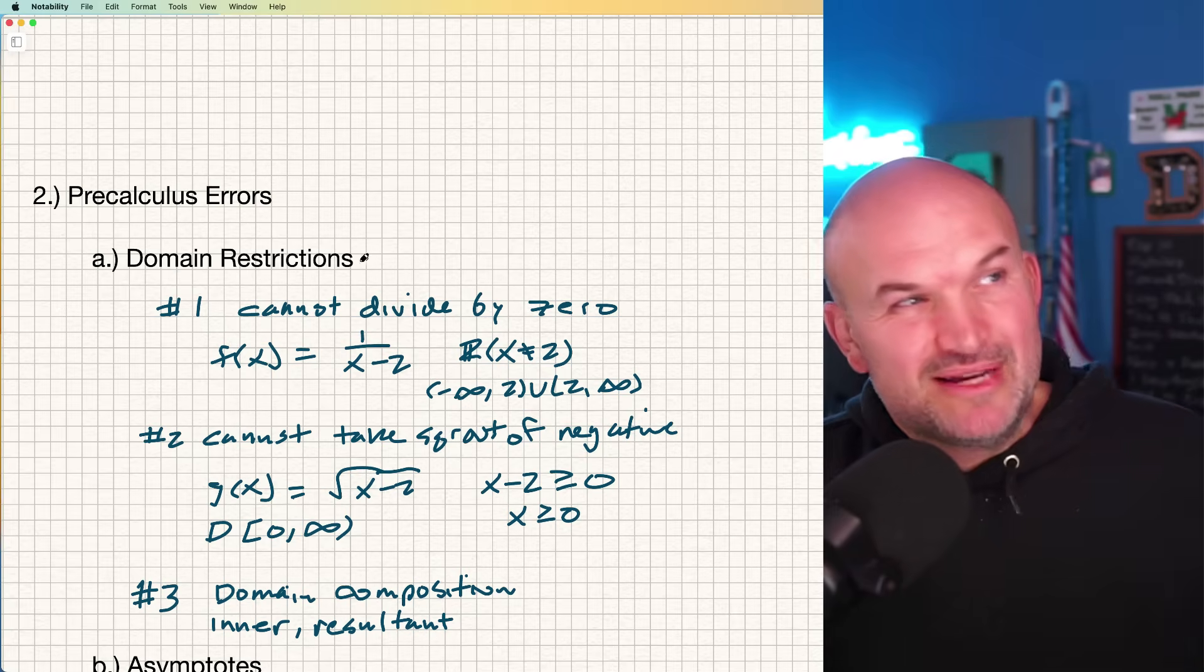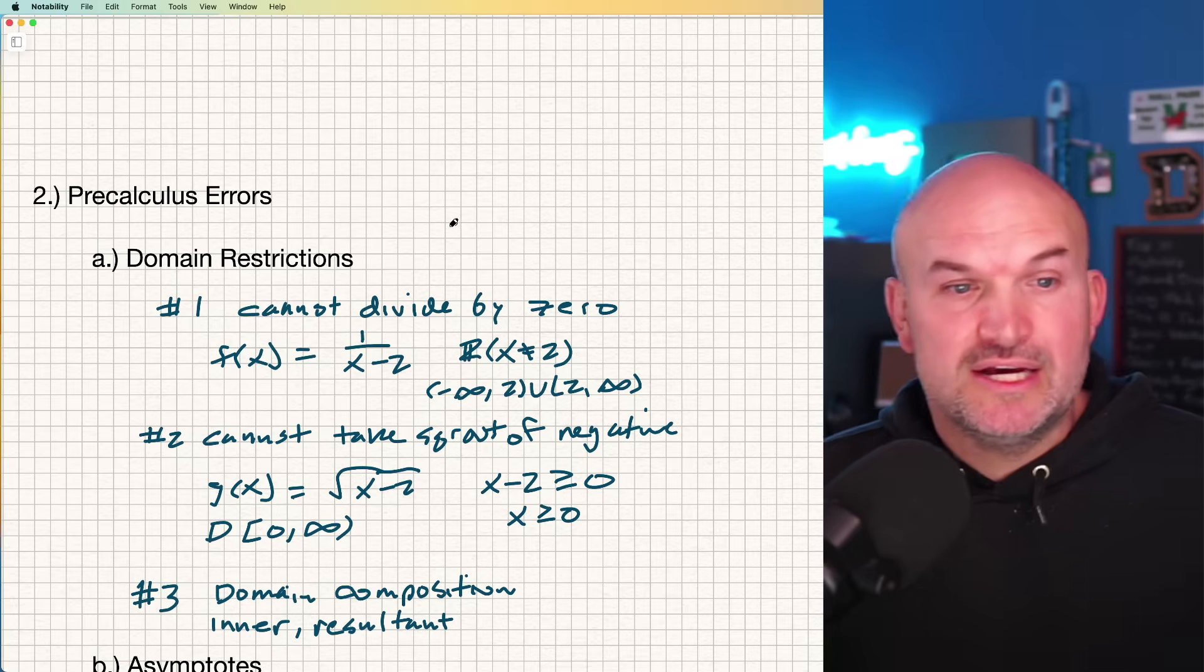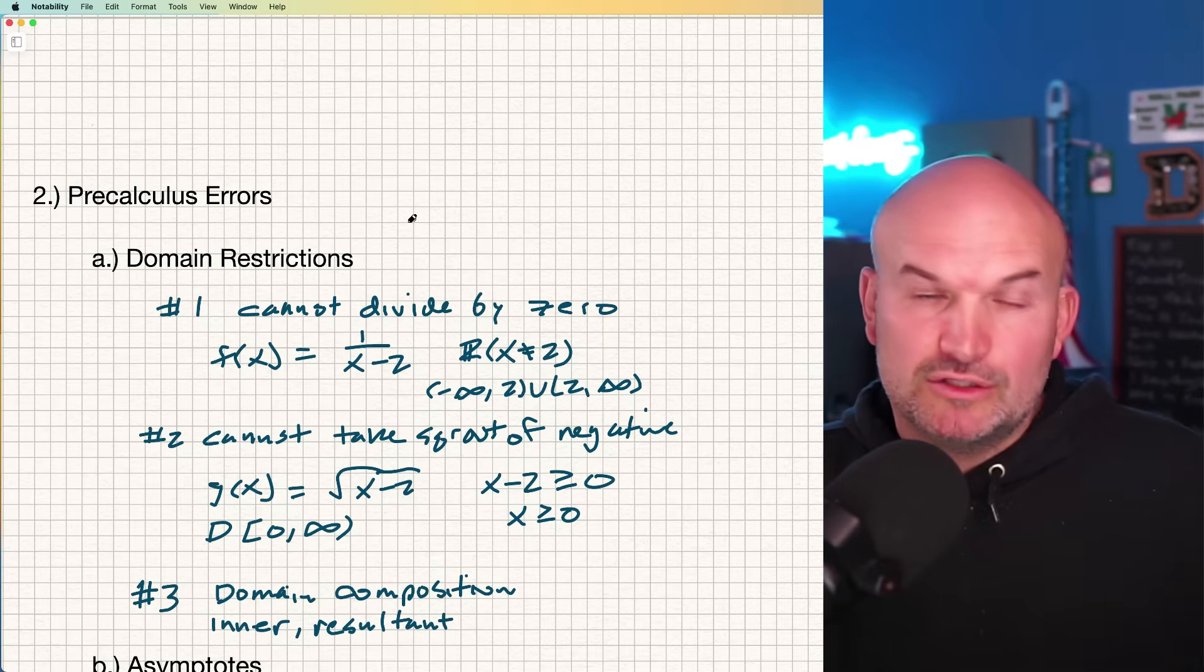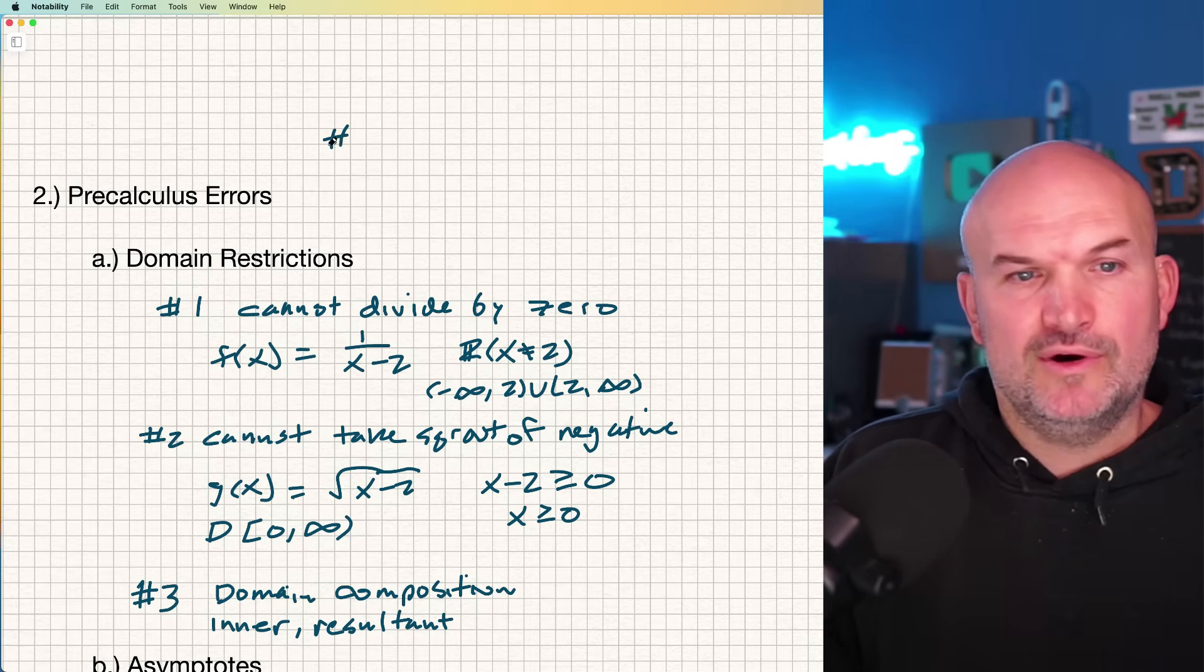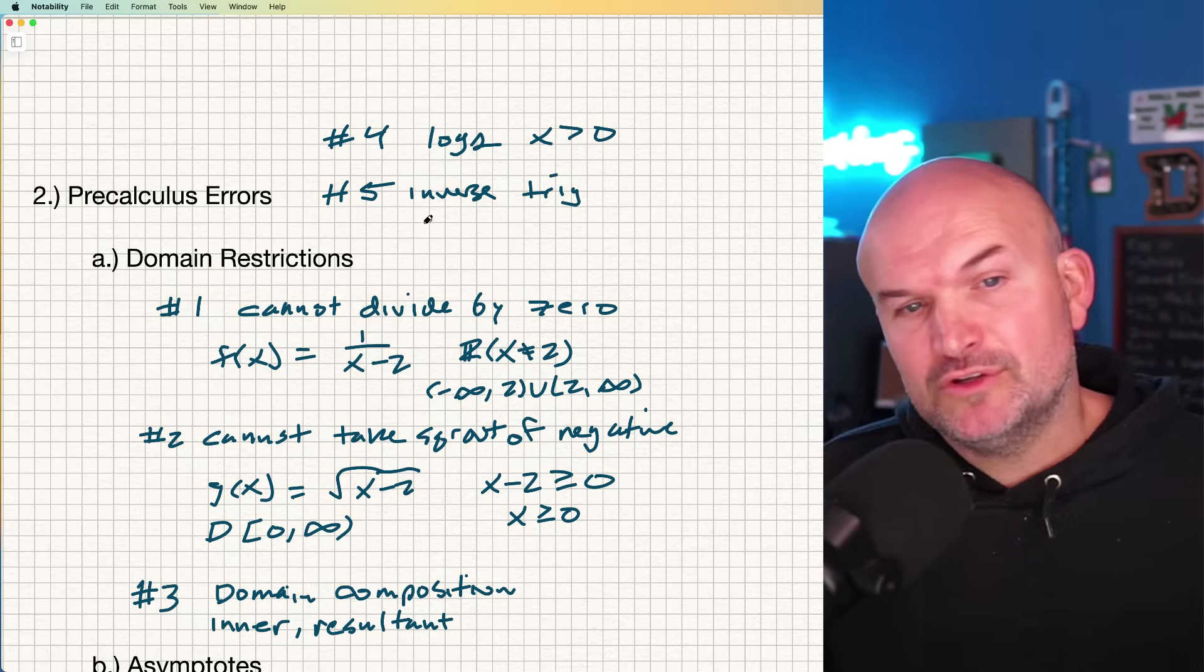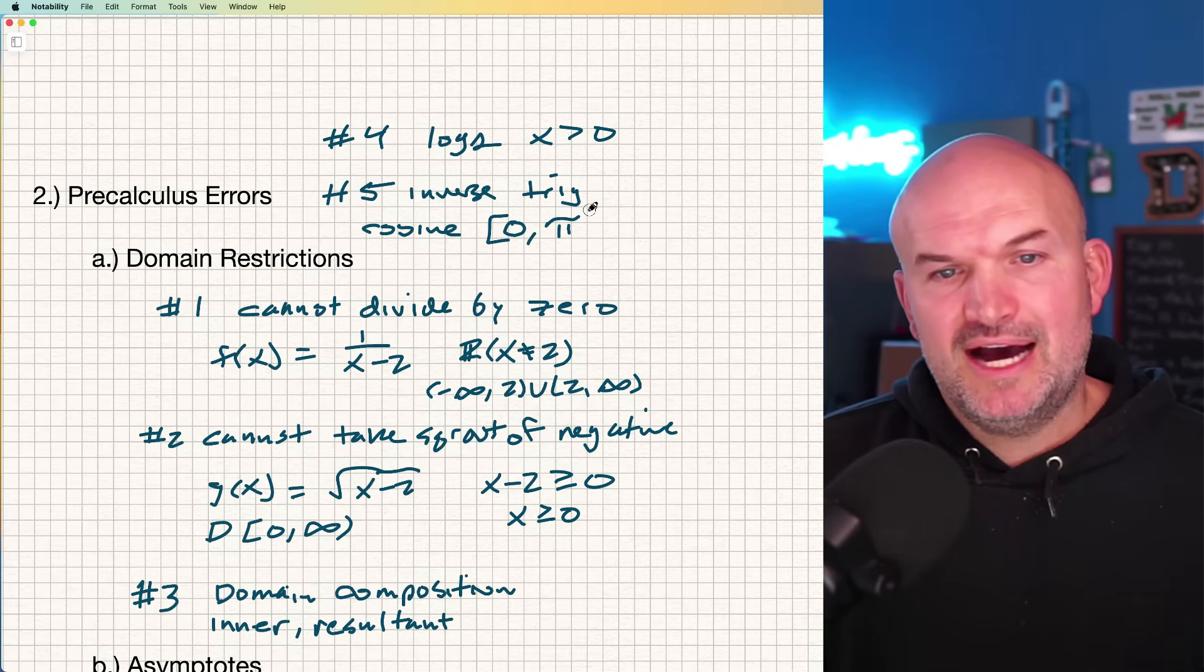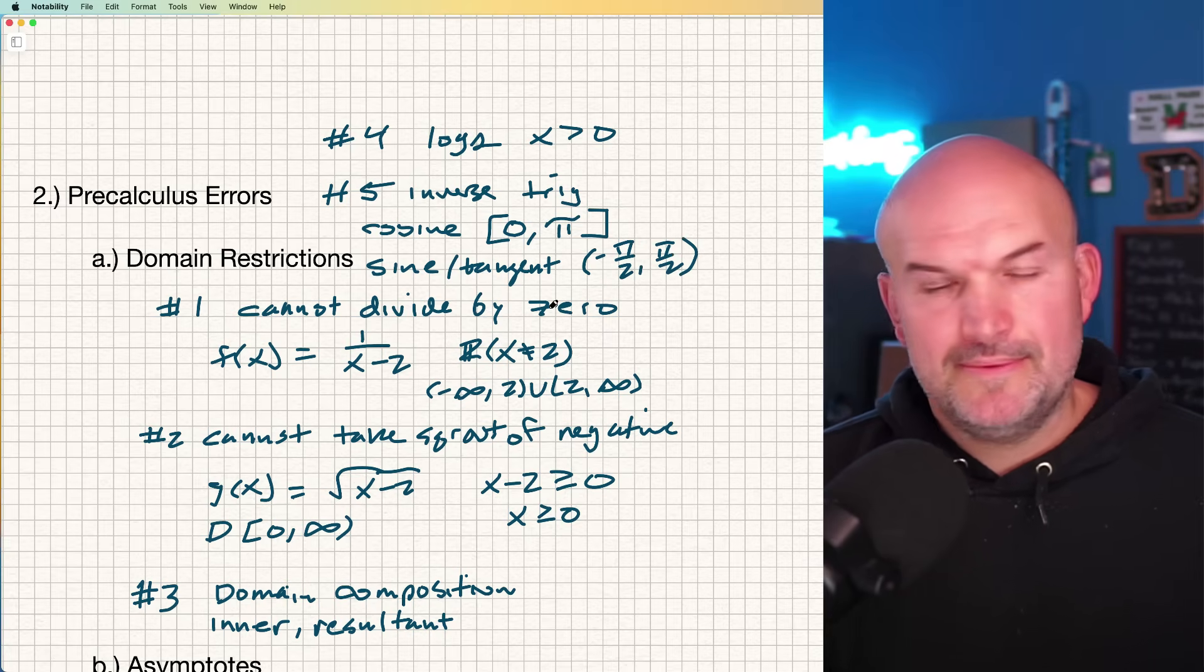The other one's also to remember, in semester one, a lot of times we also go over inverse trigonometry as well as logarithm. Make sure you also remember that for logarithms, x is greater than zero. You can only take the logarithm of numbers that are larger than zero and not including zero. And then remember the domain restrictions for inverse trig. Number four is logs, x has to be greater than zero. Number five is inverse trig. We have those restrictions for cosine from zero to π, and then sine and tangent from negative π/2 to π/2.